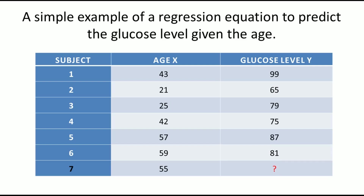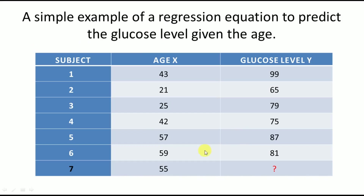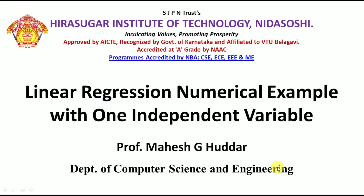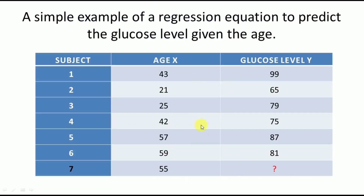To solve this, we need to calculate the equation: y is equivalent to b0 plus b1·xi, where b0 is the intercept and b1 is the coefficient of x, the independent variable, and y is the dependent variable. We know the value of x is 55, but we do not yet know the values of b0 and b1 — we need to calculate them from the given data points.